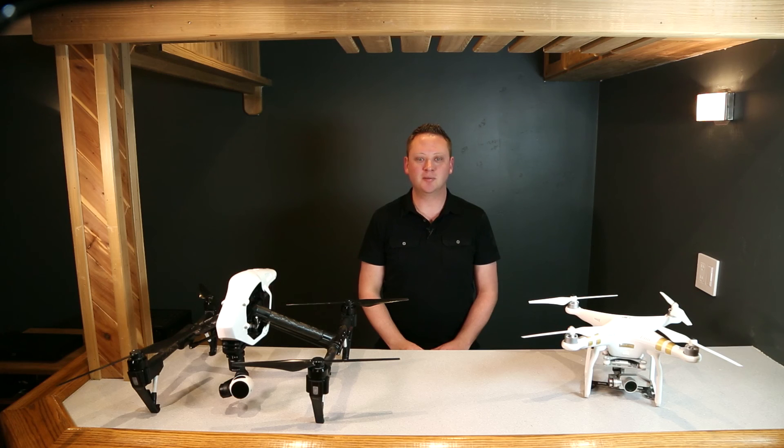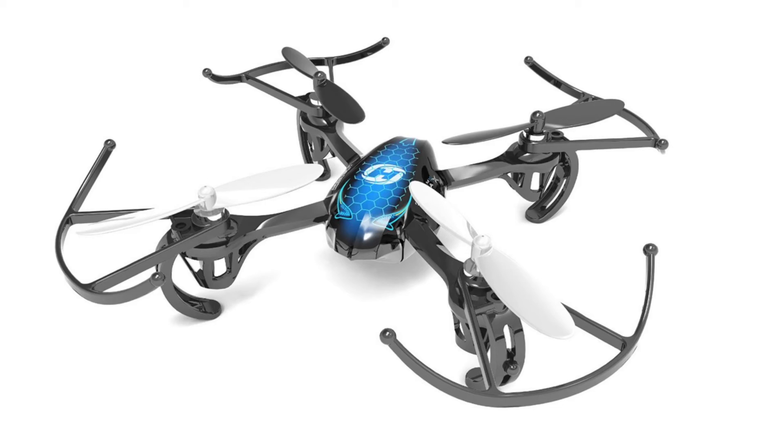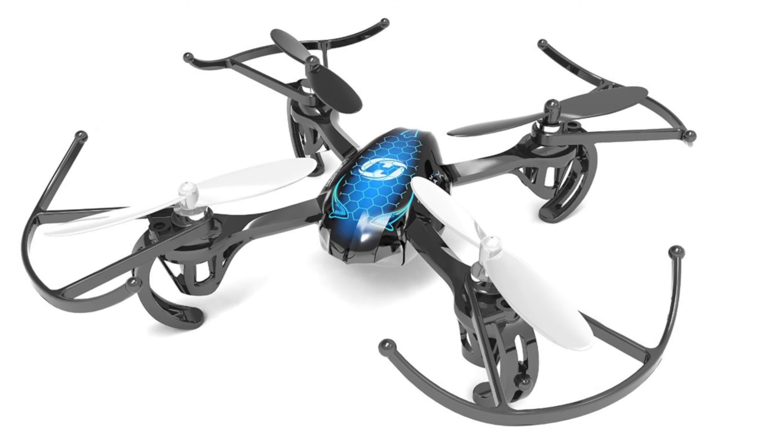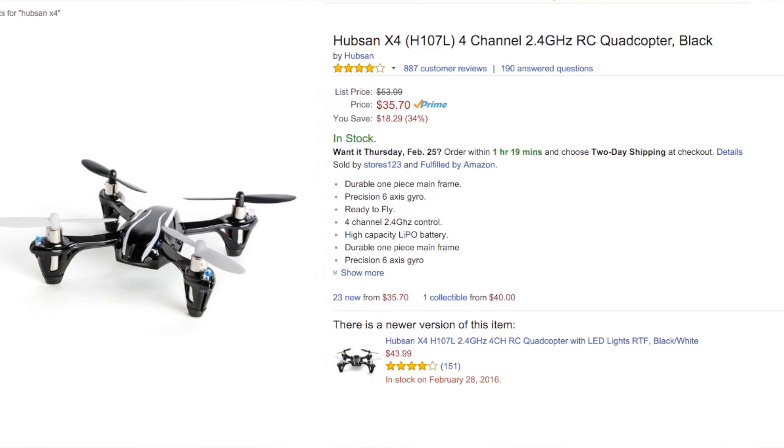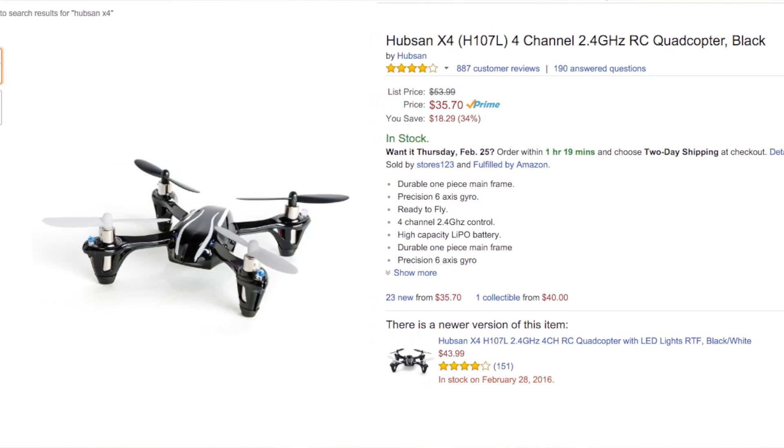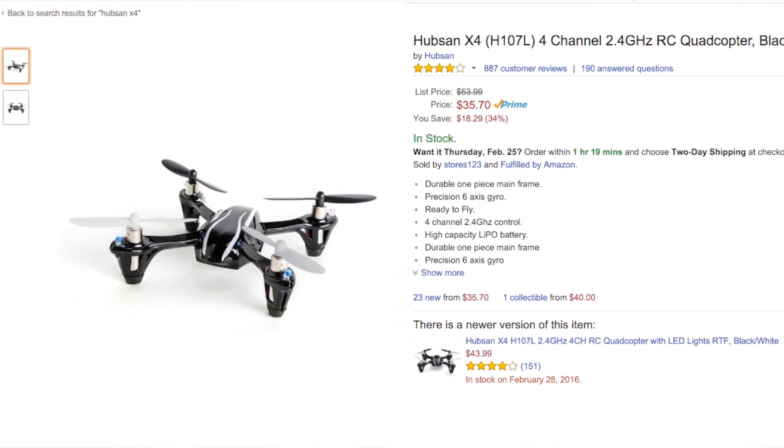Lastly, I wanted to show you some micro drones. These little guys are getting more and more sophisticated, and some of them even have built-in cameras. These are ideal for learning how to fly because they're so inexpensive and durable. Amazon is a great place to find these micro drones, as well as Hobby King.